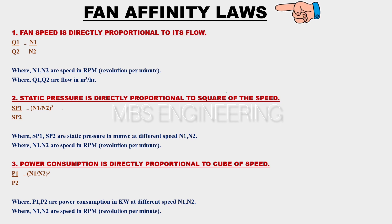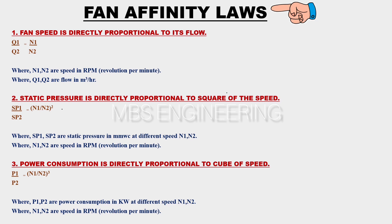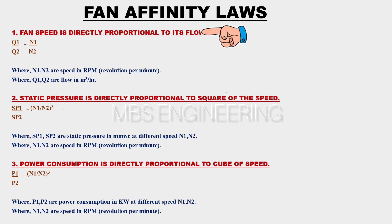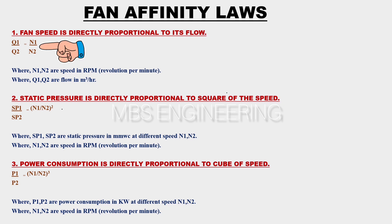Next, we learn about the formula for fan affinity laws. It states the relationship between a fan's flow, static pressure, speed, and power consumption. The first affinity law: fan speed is directly proportional to its flow. The fan speed N1 divided by N2 is directly proportional to its flow Q1 divided by Q2.